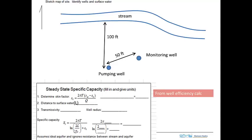And then this is the calculation here. Just fill in the blanks. And one thing that I've added here that wasn't in the earlier video is this thing, this skin factor. And the reason for including it here is because the steady state specific capacity, this is the pumping rate divided by the drawdown in the well.